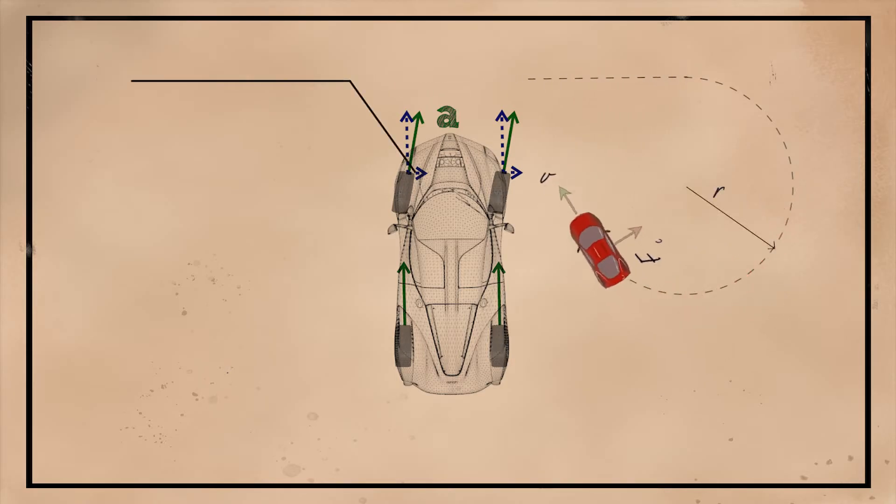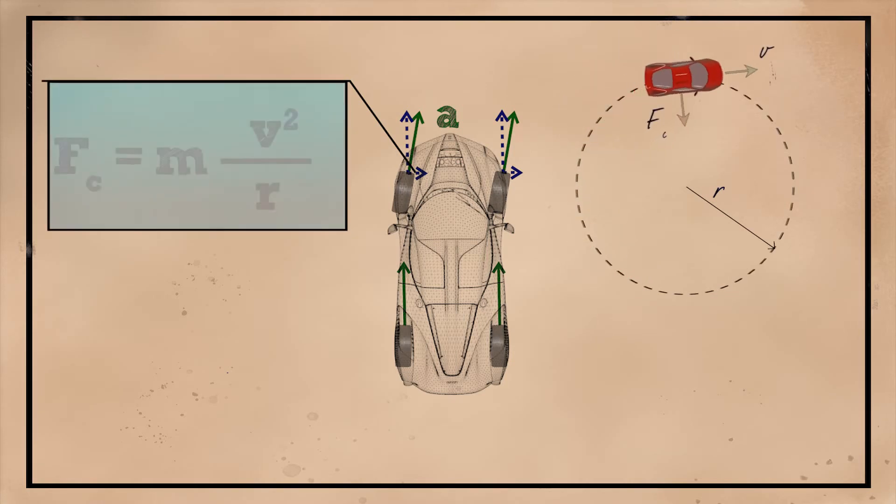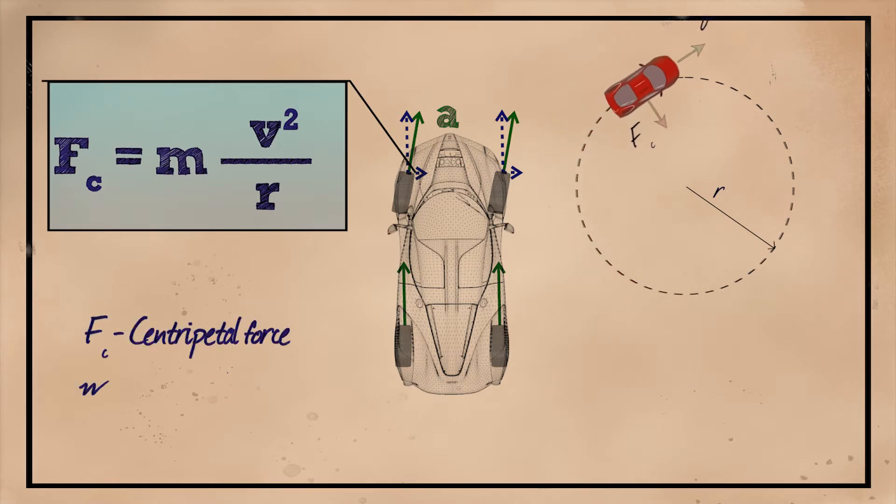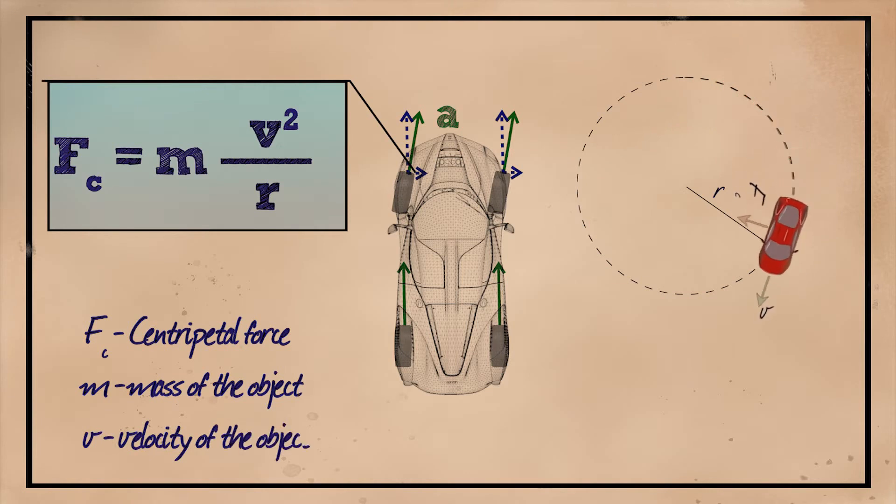This component is the centripetal force, FC in this case, which is needed for circular motion. If FC is not high enough, meaning the traction force between the tires and the road is less than m times v squared over r, then the car would slide off the road in an attempt to keep moving in a straight line, as noted in Newton's first law.